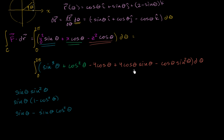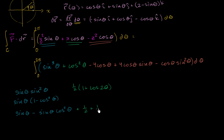Let's rewrite all of these in a way that's easy to take the antiderivative. Cosine squared theta — using the common trig identity — is the same thing as one half of (1 plus cosine of 2 theta). This is much easier to take the antiderivative of. So we write plus one half plus one half cosine of 2 theta.